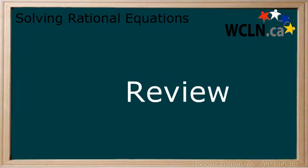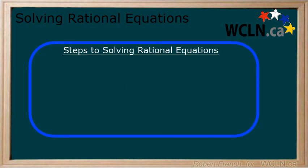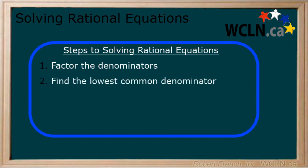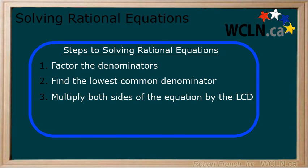In this lesson, you learned about solving rational equations and that there are 5 steps to the process. Factoring the denominator. Finding the lowest common denominator. Multiplying both sides of the equation by the lowest common denominator. Solving for the variable and stating any restrictions.